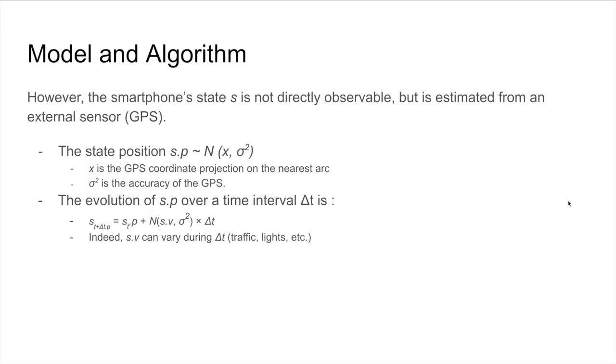However, the smartphone state s is not directly observable, but we can estimate it from an external sensor, which is the GPS in our case. So the state position is expressed as a Gaussian distribution given by x, which is the GPS coordinate projected on the nearest arc, and the uncertainty is the accuracy of the GPS. The evolution of this position over time interval is given by this formula here, which is basically just position plus velocity with a little bit of uncertainty on it because it can vary during this interval due to traffic lights.